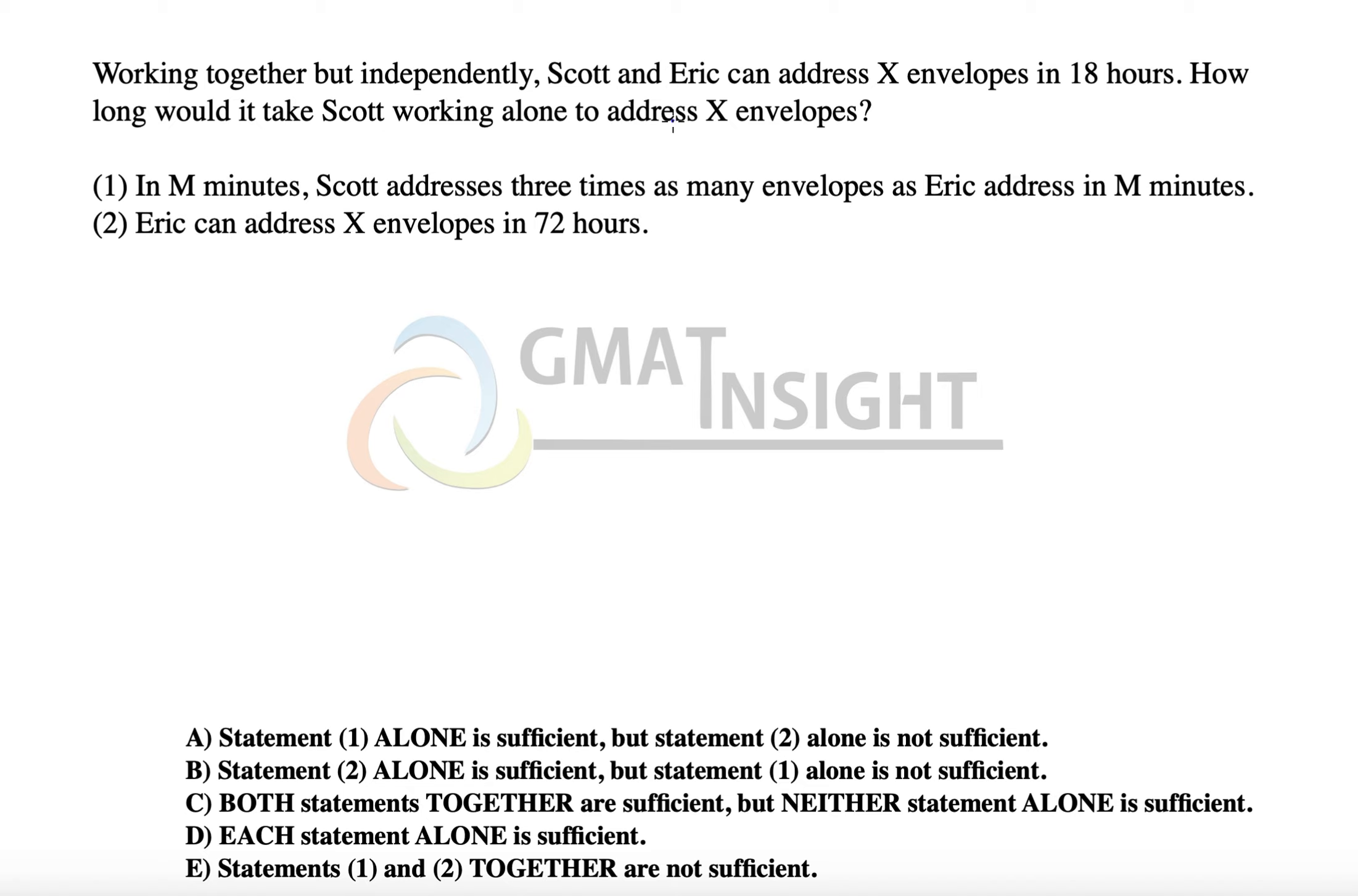Working together but independently, Scott and Eric can address x envelopes in 18 hours. That means in 1 hour they finish 1/18 of the total envelopes—this is the combined rate of Scott and Eric. How long would it take Scott working alone to address x envelopes?